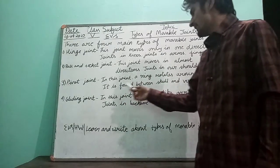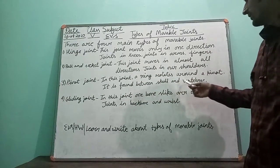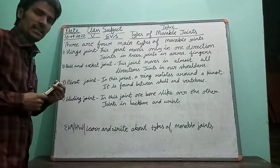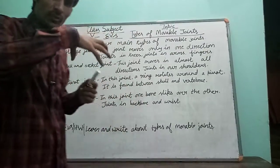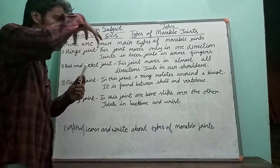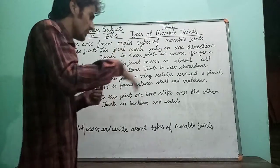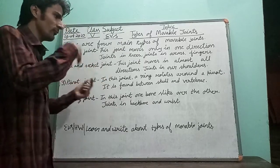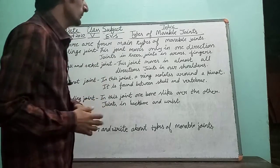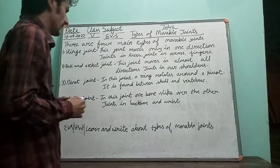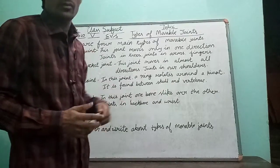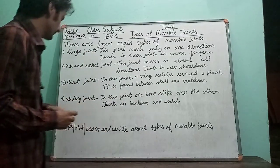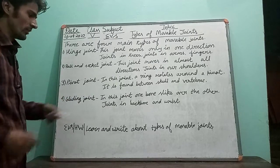Third is the pivot joint. In this joint, a ring rotates around a pivot. There is a pivot and a ring-type structure that sits on top of the pivot. This type of joint can move in nearly all directions. It is found between the skull and vertebra.